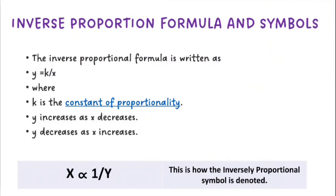The inverse proportional formula is written as y is equal to k divided by x, where k is the constant of proportionality. y increases as x decreases, and y decreases as x increases. This is how the inversely proportional symbol is denoted.